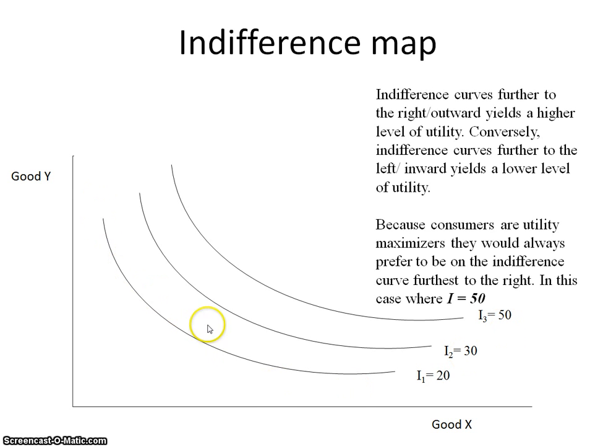Regardless of where the consumer chooses to consume on I2, the utility derived on either combination choice will yield 30. And on I3, regardless of where the consumer chooses to consume of good Y and good X, every combination choice yields a value of 50.